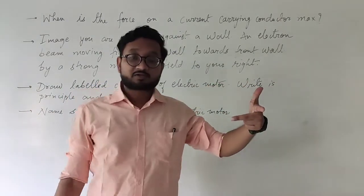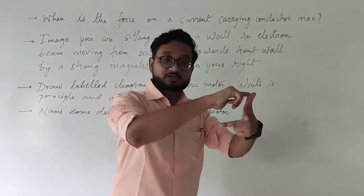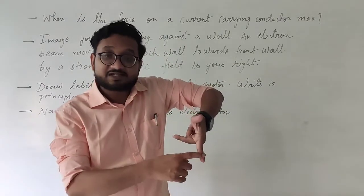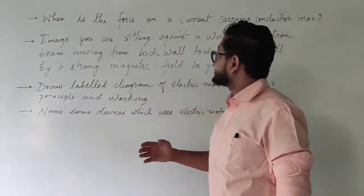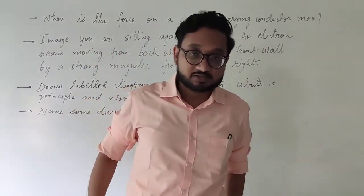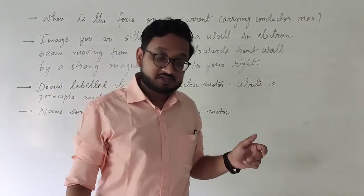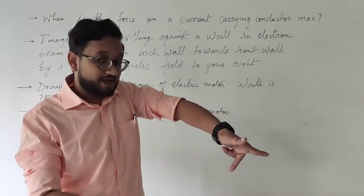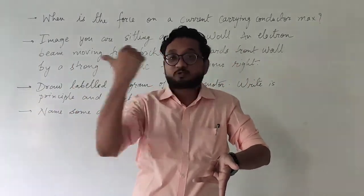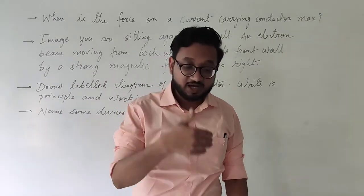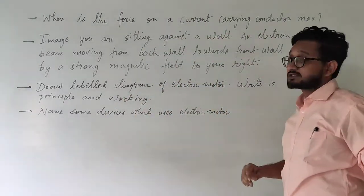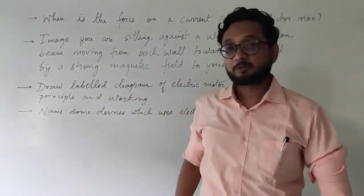The direction of the electron is shown by the thumb, which is to the right side. The second finger shows the direction of the current, which is in the opposite direction to the electron. My first finger, which shows the direction of magnetic field, points in the downward direction. Hence the direction of the magnetic field is downward. That is how you find the direction using Fleming's left hand rule.